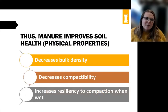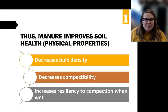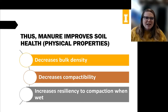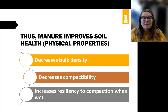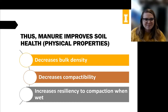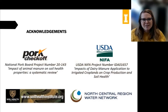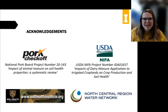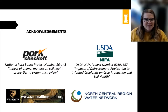To wrap up: manure improves soil health — specifically physical properties — by decreasing bulk density, decreasing compactability, and increasing resiliency to compaction when the soil is wet, which is when it's most susceptible to compaction. I want to make acknowledgements about all the funding that went into this research. A lot of information went into these resources. Thank you.